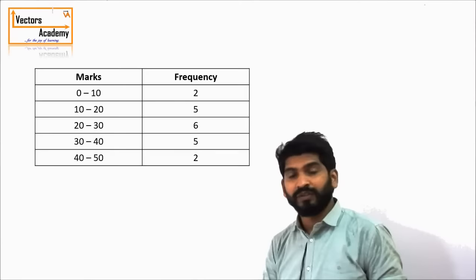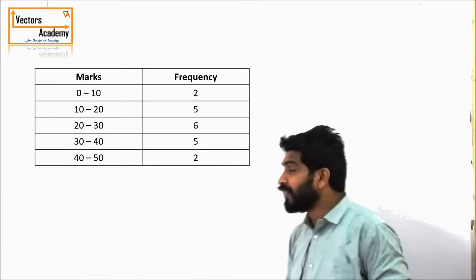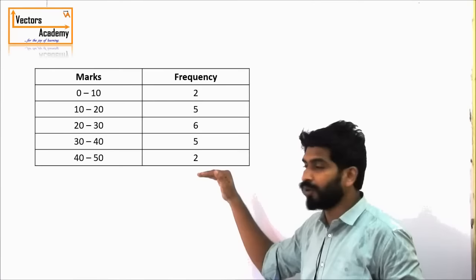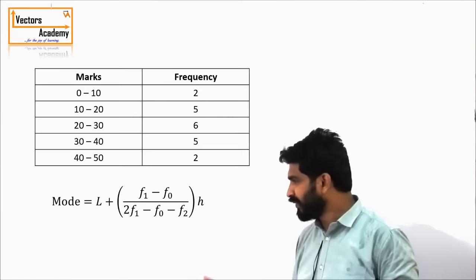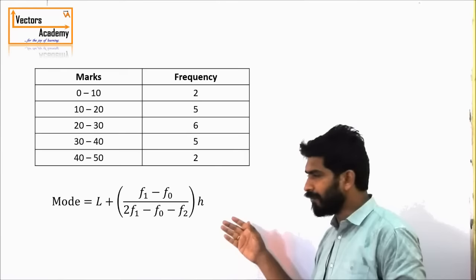What is mode? Mode is the value which occurs the maximum number of times. The maximum number of students lie in the third class, from 20 to 30, so the value of mode will lie between 20 and 30. The formula to calculate mode is: Mode = L + [(F1 − F0) / (2F1 − F0 − F2)] × H.